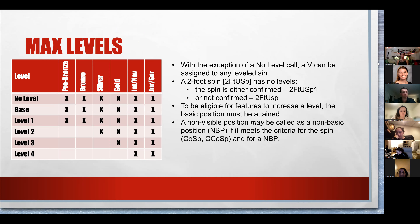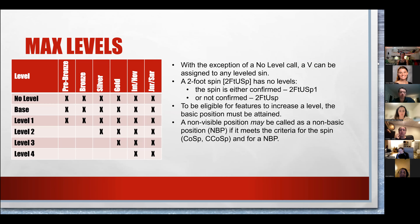One of the spins that does not have levels is the two-foot spin, with the code 2FTUSP. That's either confirmed, where you'll see a one — which does not stand for a level, just confirms it's done — or if not confirmed, there will be no number after it. To be eligible, features will increase the level if the basic position is attained. It is also possible that a non-visible position may be called as a non-basic if it meets specific criteria, and that would be eligible for the non-basic position feature.